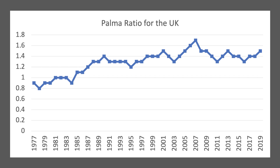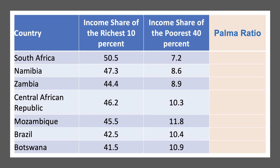Although you can also notice it was edging up higher in the years before the COVID pandemic. The UK has a Palmer Ratio of about 1.5, but of course, different countries will have very different income distributions. Here's a selection of countries with significantly higher Palmer Ratios: South Africa, Namibia, Mozambique, Brazil, and Botswana.